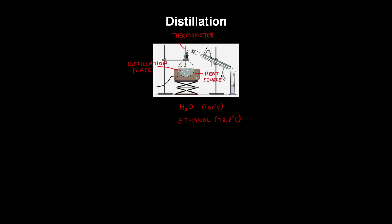At 78.2 degrees you get ethanol vapor being produced, and due to the molecules bumping into each other you also get some water vapor, which is an impurity. The vapor passes through a condenser, which consists of a cold water inlet and outlet where water passes through the outer tube to cool the sample, and the vapor turns into a liquid called the distillate. Due to impurities, the distillation process needs to be repeated, and you can't achieve 100% purity due to vapor pressures. One cycle of distillation is known as simple distillation.